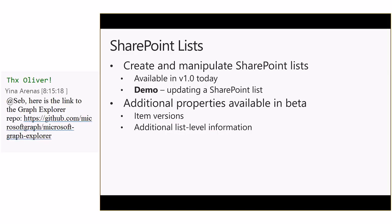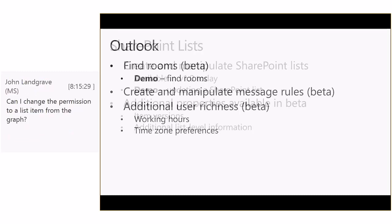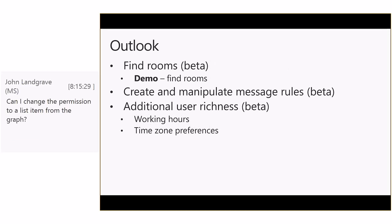In addition to what's in v1, there are additional properties currently available only in beta — for list items you can pull in item versions, and there's some additional list-level information also available in beta. Next, Luis will walk through the Outlook API.